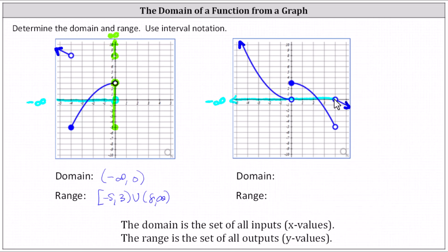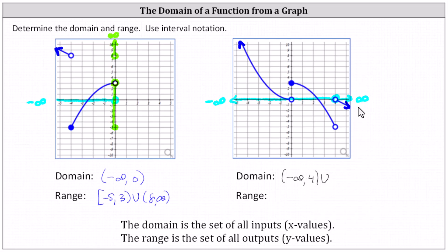The graph continues to the right. At x equals four, we have another break in the graph. Notice both points are open, and therefore the function is not defined at x equals four — four is not in the domain. The graph continues to the right and x approaches infinity. This indicates the domain is the open interval from negative infinity to four, union the open interval from four to infinity.